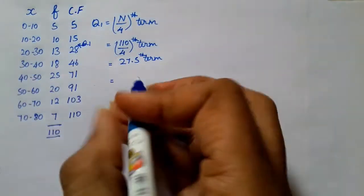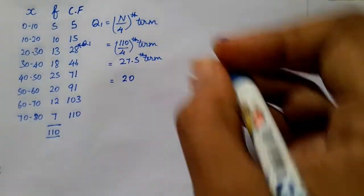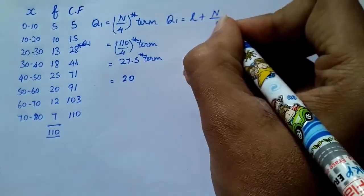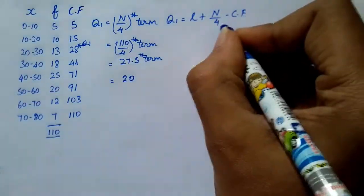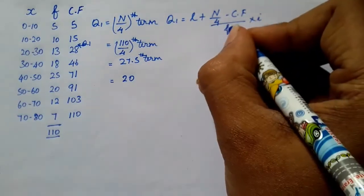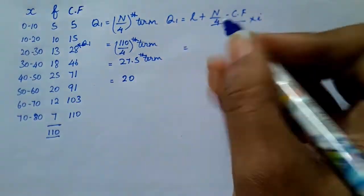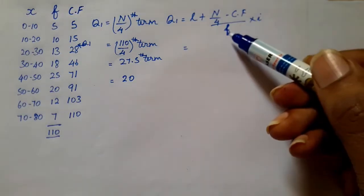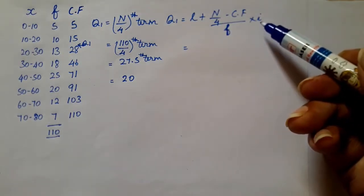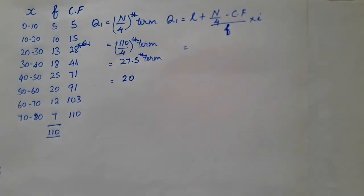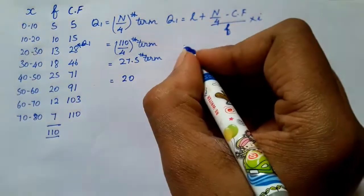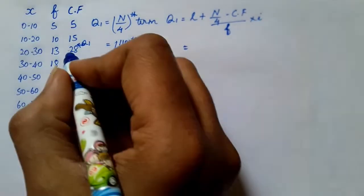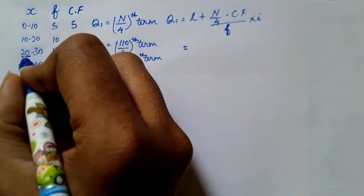The lower value is 20. So 20. Next, the alternative is q1, that number is l plus n by 4 minus cf divided by f into i. This is the formula. Now l is the lower class interval, n by 4 minus cf is cumulative frequency, and f is the frequency. i is the length of the class interval that is 0 to 10, that is class i.